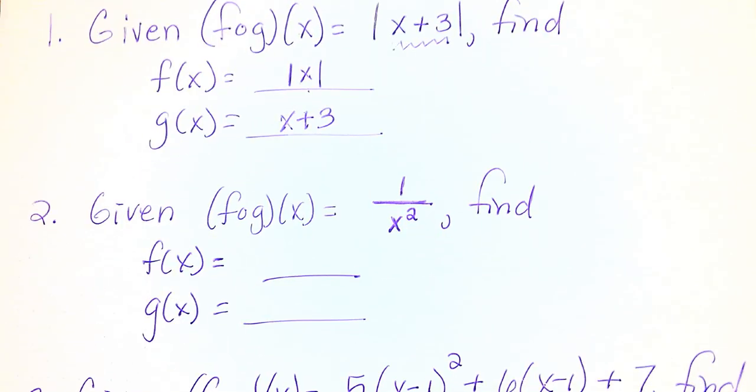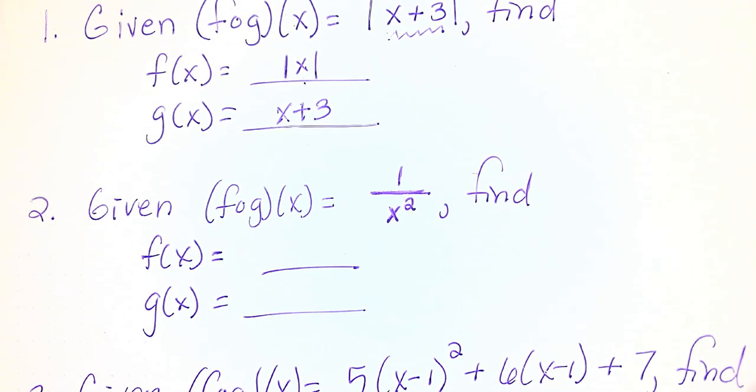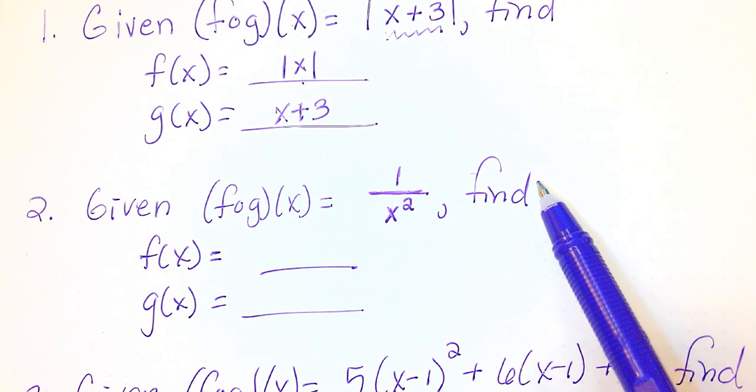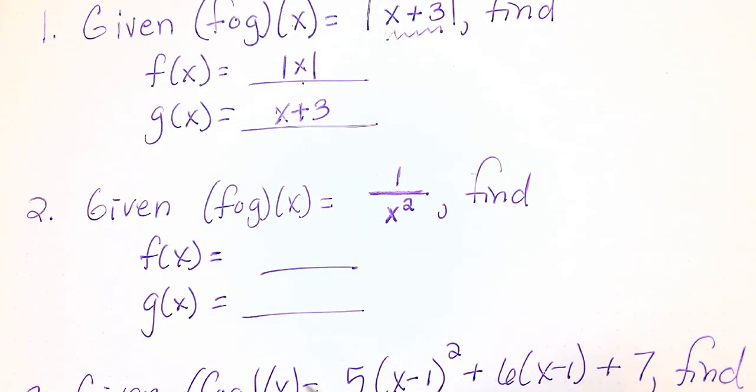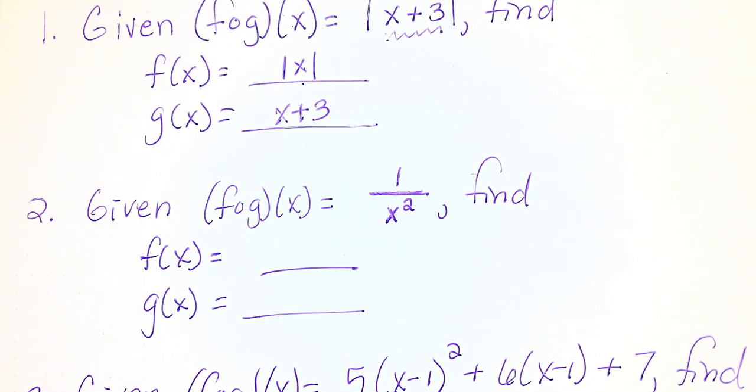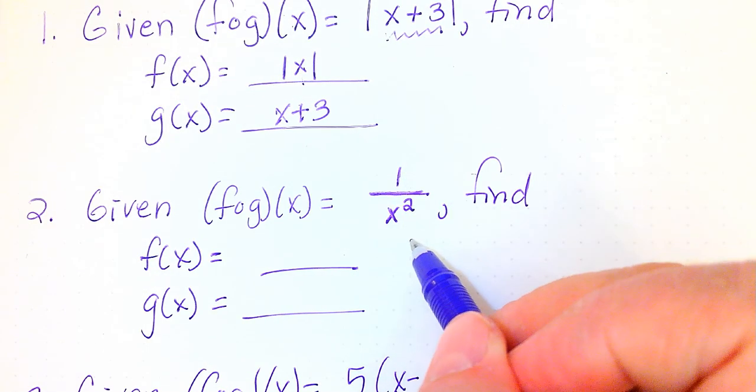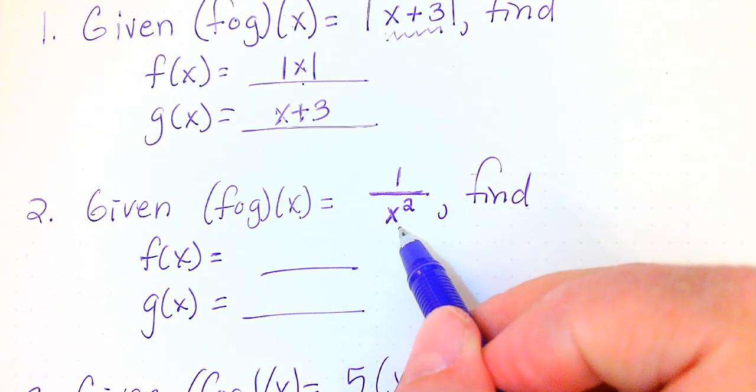Let's look at one a little more difficult. Number two, given f of g of x is 1 over x squared, find f of x and g of x. Now this one's a little harder because there's just not a lot there, number one. And number two, trying to figure out what could be the inside when there's not really an inside is a little difficult. A lot of times, the things in a rational expression that are in the denominator are often the g of x or inside function.